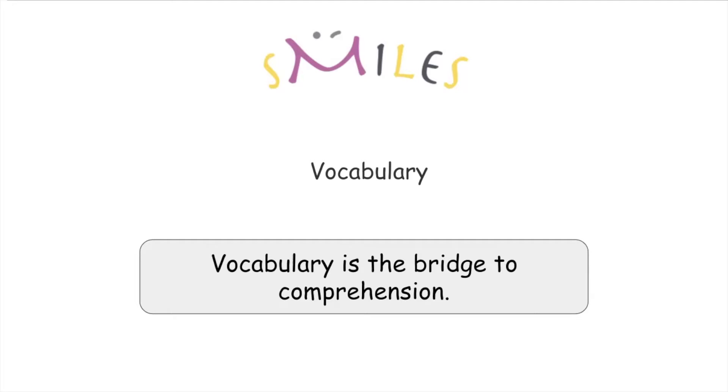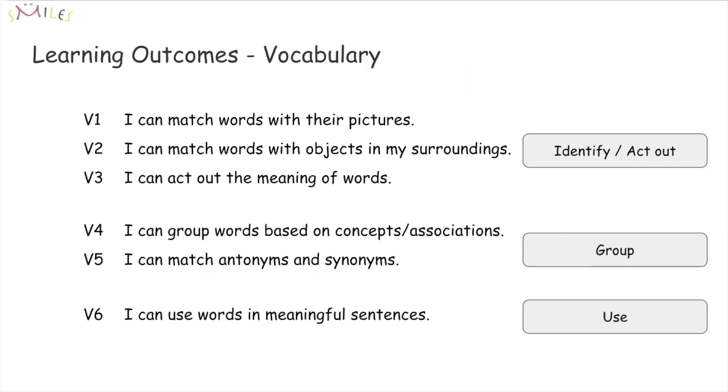Knowing the meaning of individual words in a sentence is critical to being able to understand the sentence as a whole. Six learning objectives and outcomes are considered under vocabulary. They are divided into three sets. Each set approaches the assessment of vocabulary from a different direction.